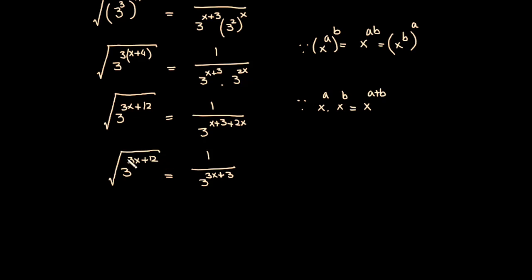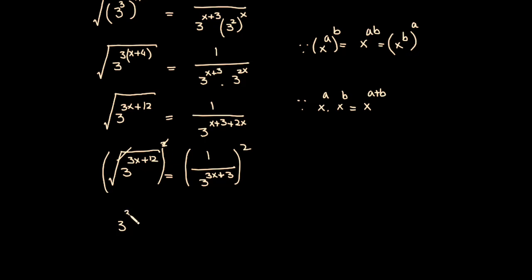On the left-hand side there is a square root but on the right-hand side there is no square root. I don't like the square root, so I have to square both sides to cancel it. Squaring both sides: the square and square root cancel, giving 3 raised to the power 3x plus 12.